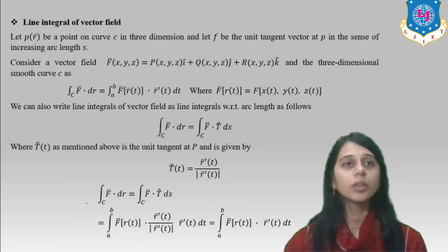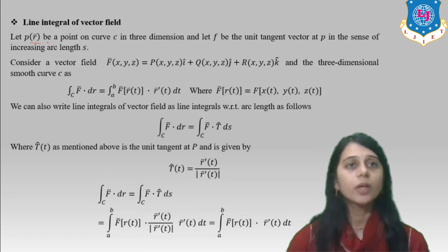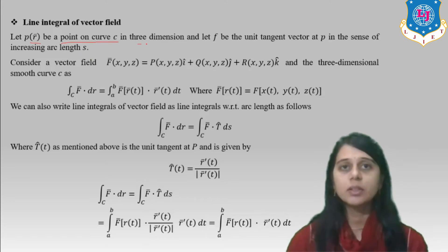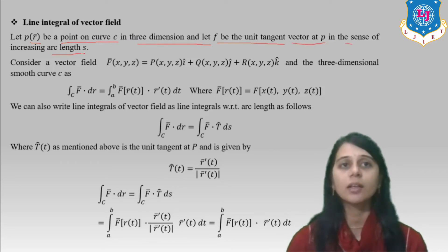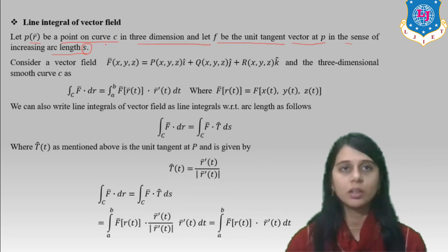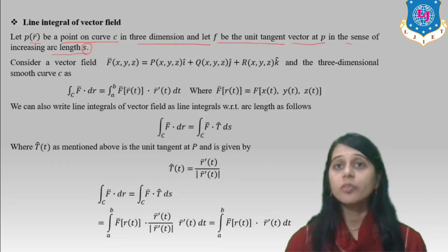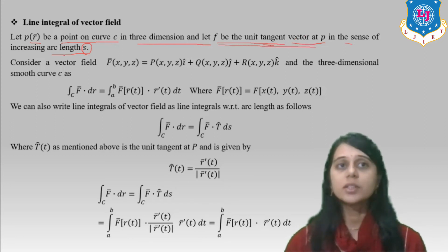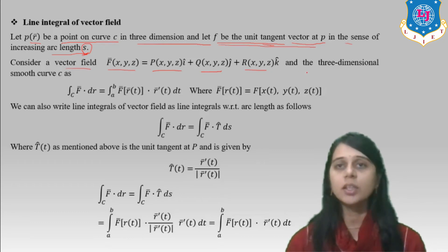Now, line integral of the vector field. Let P(r-bar) be a point on curve C in three dimensions. Let T-hat be the unit tangent vector at P in the sense of increasing arc length s. Consider vector field F-bar(x,y,z) = P(x,y,z)·i-hat + Q(x,y,z)·j-hat + R(x,y,z)·k-hat on a three-dimensional smooth curve.